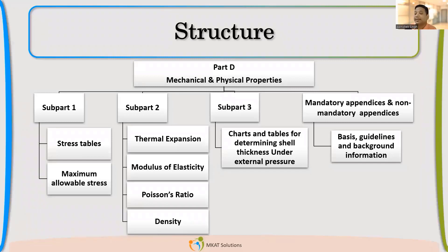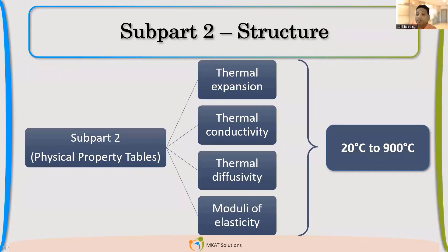In Subpart 2, we have physical properties like thermal expansion, thermal conductivity, diffusivity, modulus of elasticity, density, and Poisson's ratio. All these physical properties you will be able to find in Subpart 2. This may be required many times when we have to calculate thermal expansion or we need density — then we have to follow these tables.